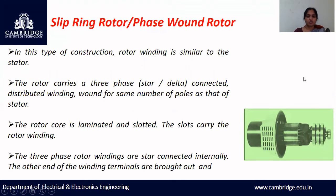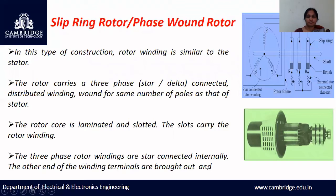The second type is the slip ring rotor or phase wound rotor. In this construction, the rotor winding is similar to the stator. The rotor carries a three-phase star or delta connected distributed winding, wound for the same number of poles as the stator. The rotor core is laminated and slotted, and the slots carry the rotor winding. The three-phase rotor windings are star connected internally, and the other ends of the winding terminals are brought out. As seen in the diagram, additional external resistance can be added, giving you the option to control rotor resistance.